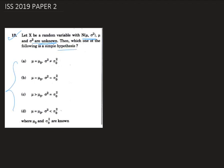We are given four options. Option A says μ = μ₀ and σ² ≠ σ₀². Option B says μ = μ₀ and σ² = σ₀². Option C says μ > μ₀ and σ² = σ₀². And the last option D is μ = μ₀ and σ² < σ₀², where μ₀ and σ₀² both are known.